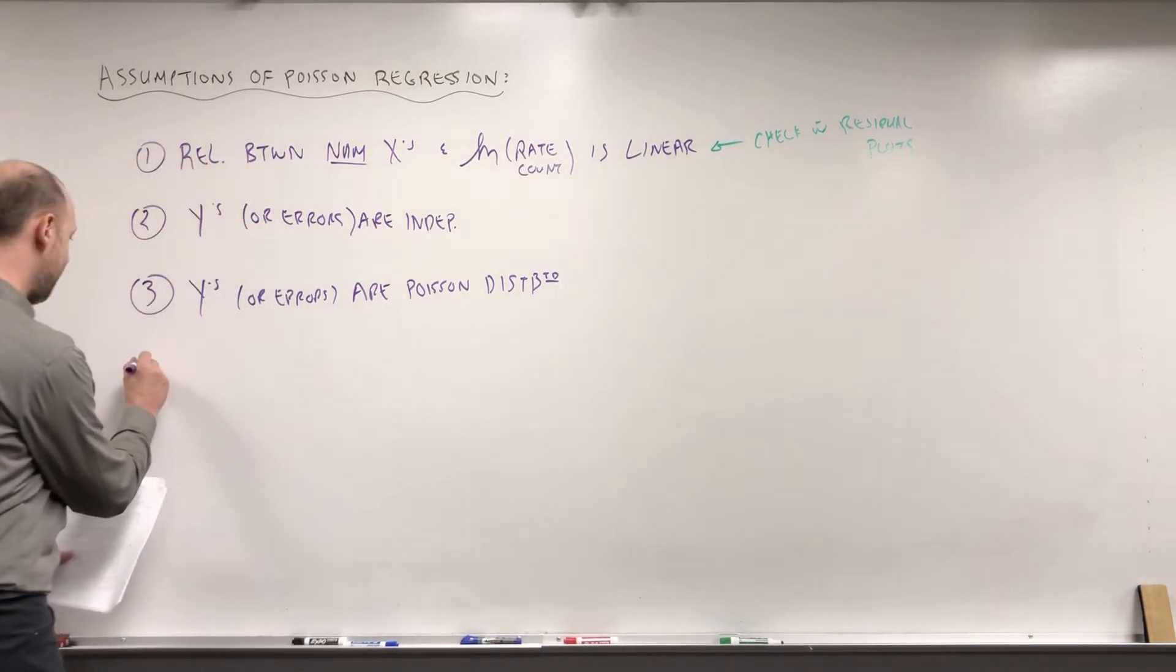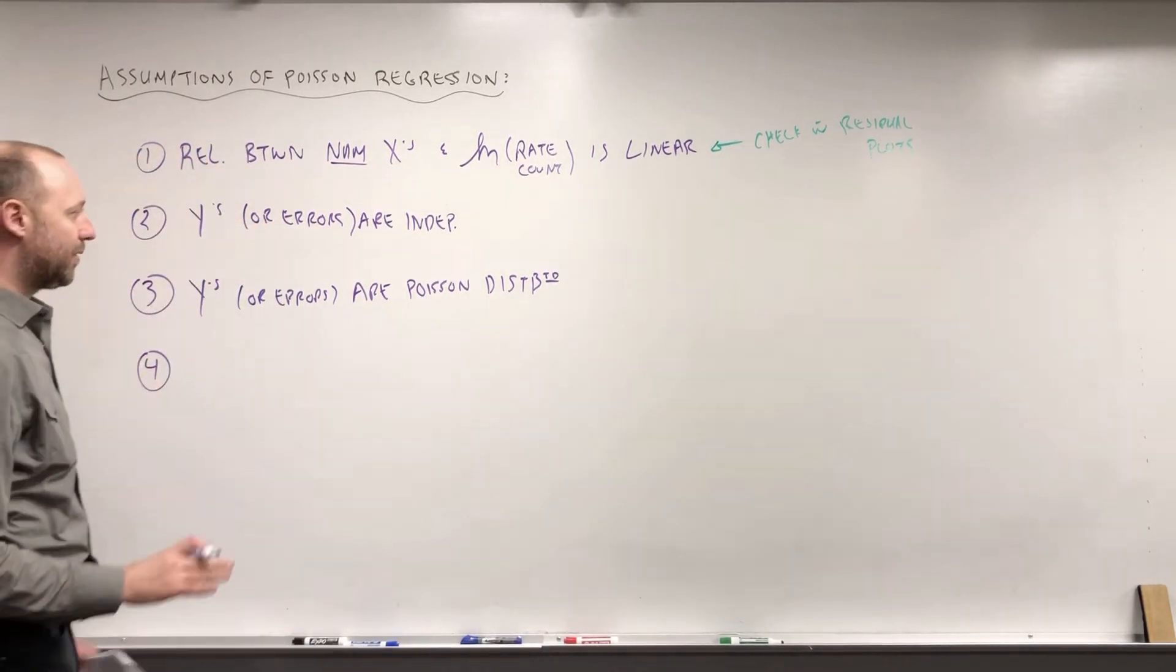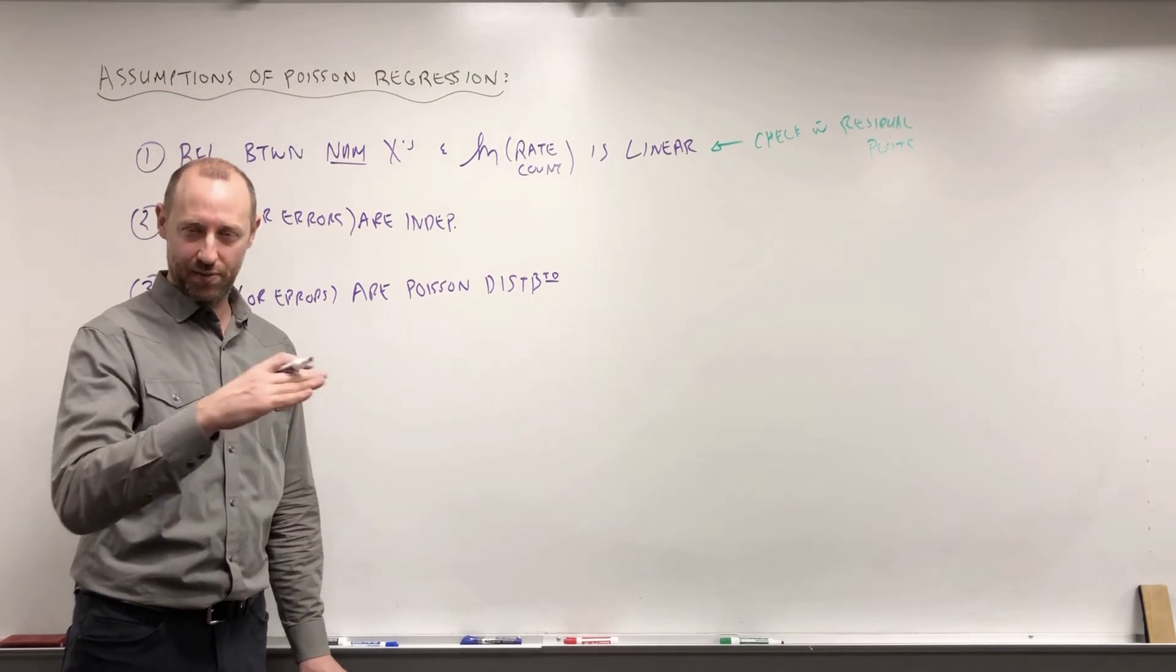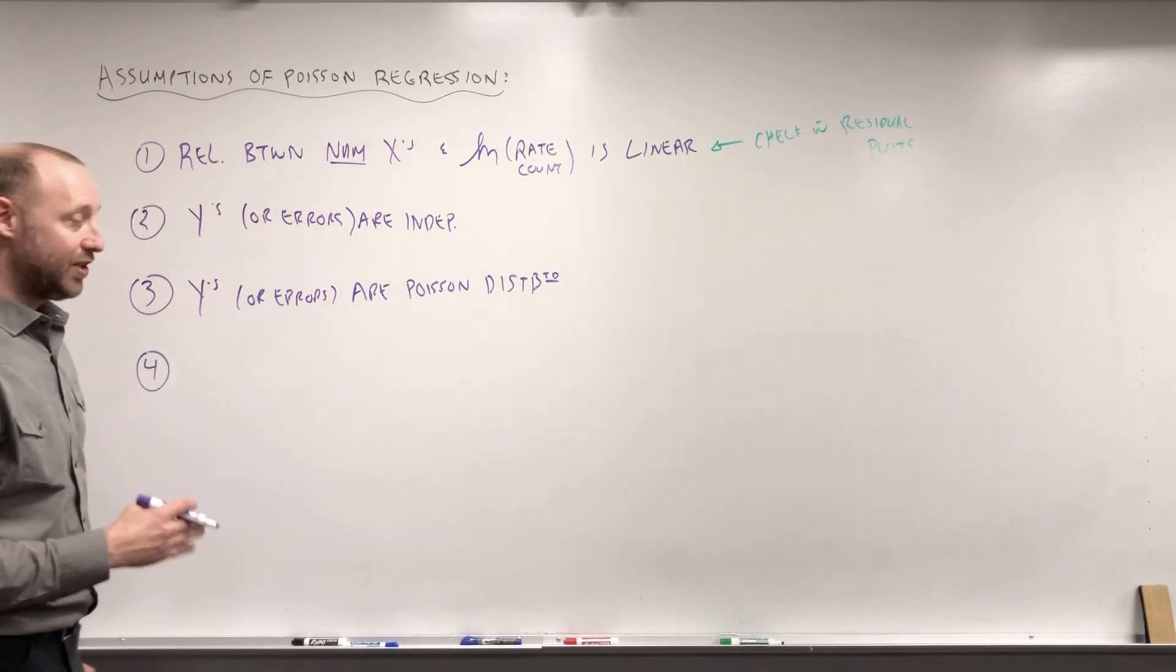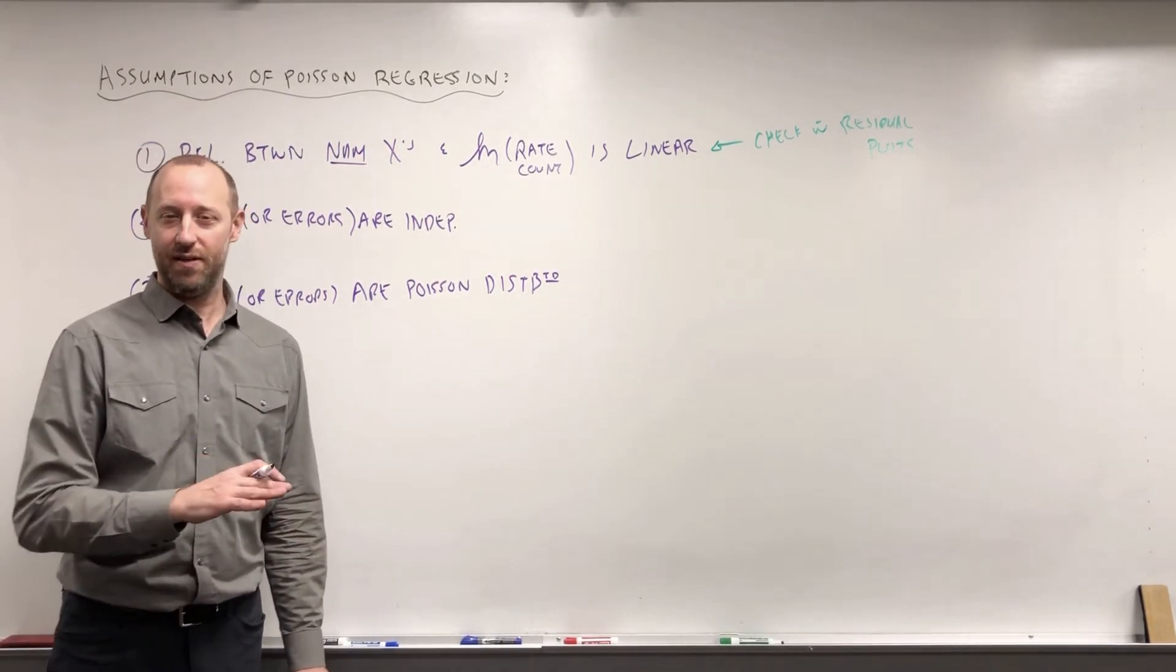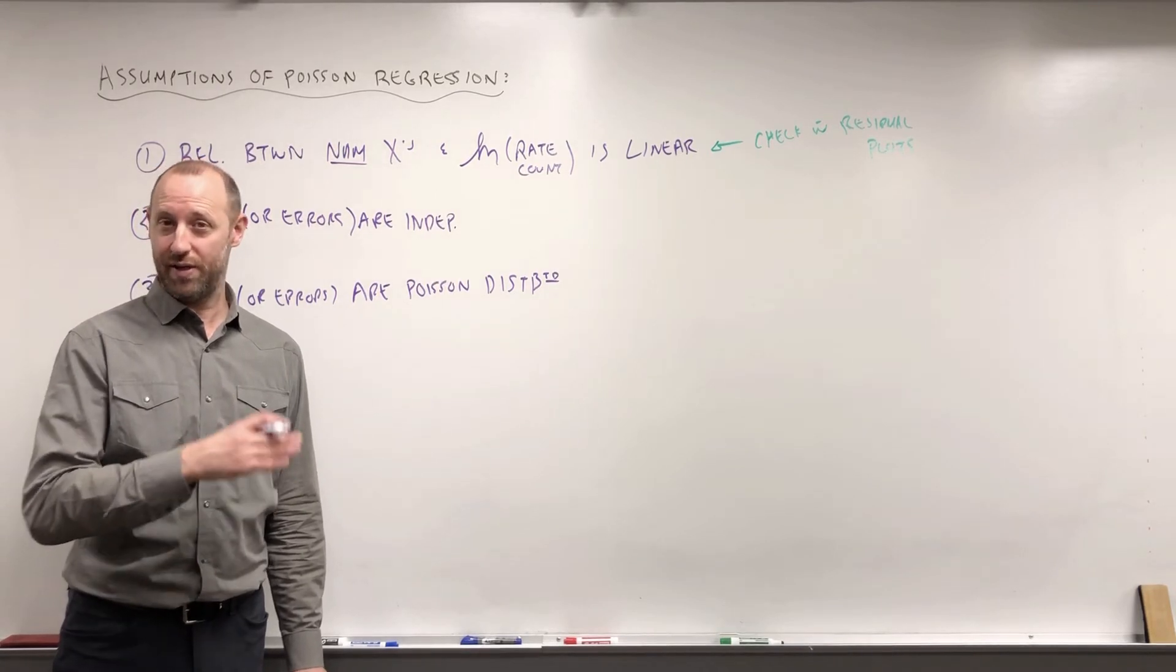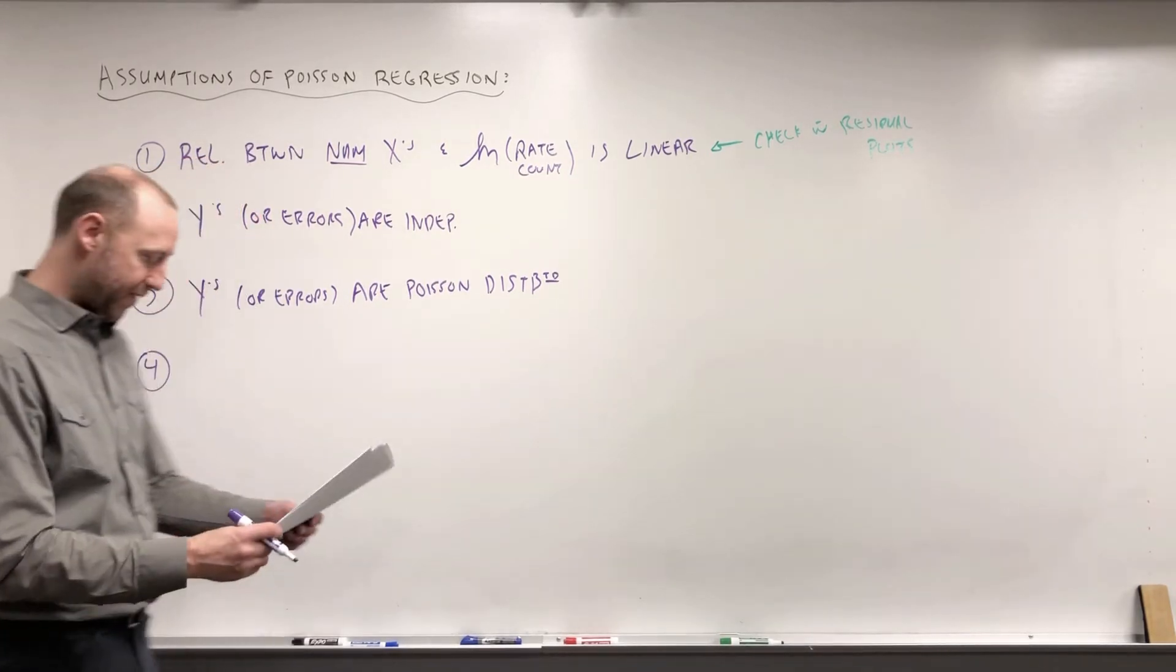And the final assumption: if you remember, linear regression, variance was constant around the regression line. For logistic regression, the errors were not constant, they followed a binomial, they were related to the probability of the outcome.